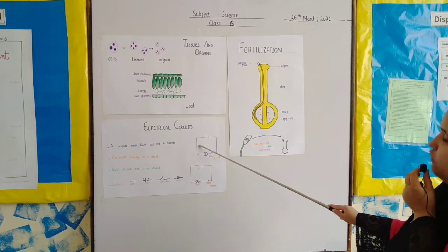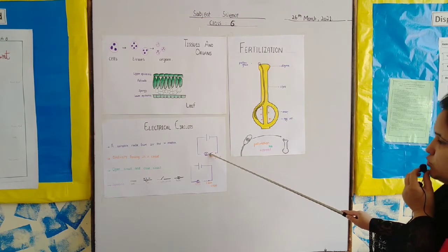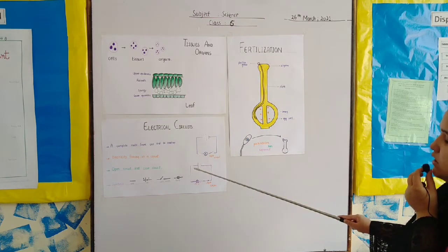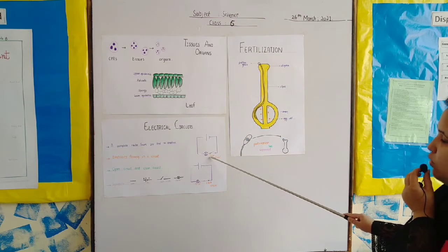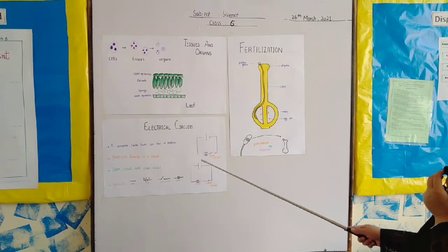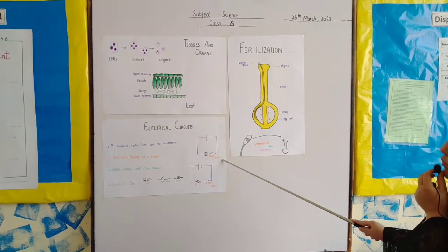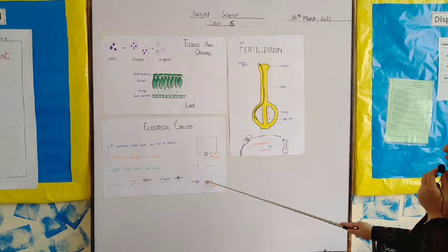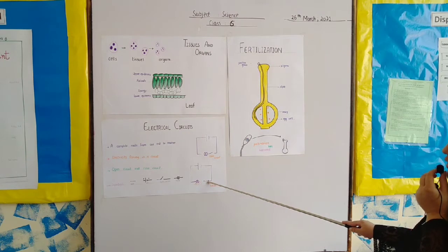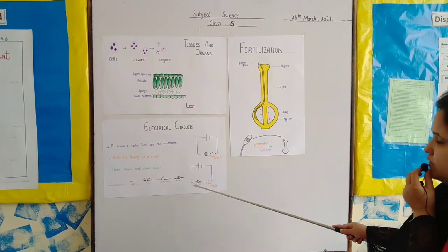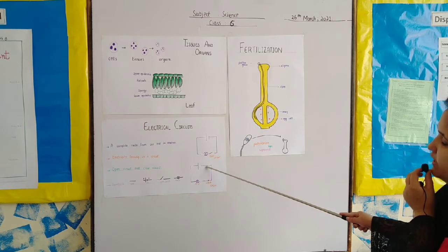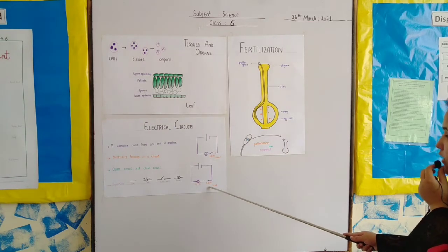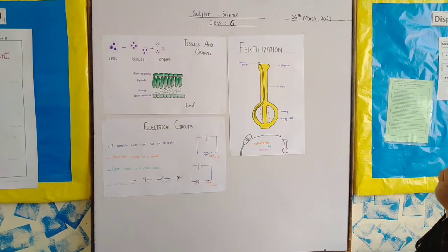Because we use switch to control the current inside the electrical circuit. So this is called an open circuit. Now if we switch on, when we switch on, what happens is that the switch connects with the other part. And what happens? That the bulb glows and this circuit is complete. When the circuit is complete, we call this a closed circuit.